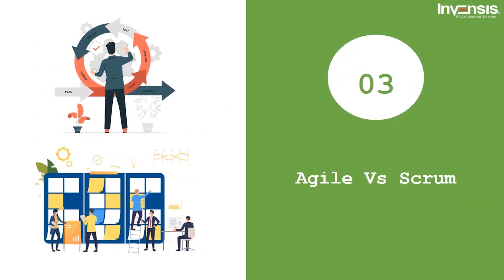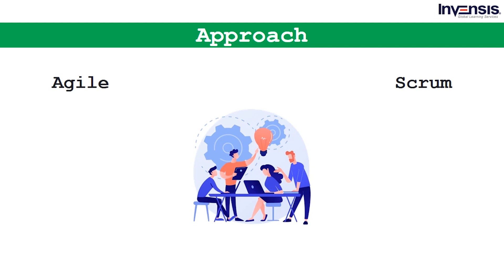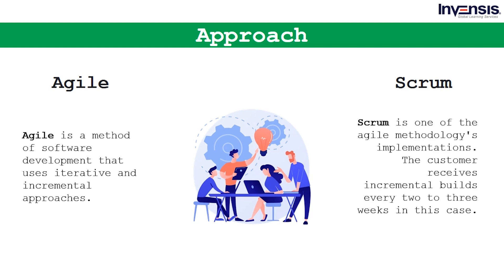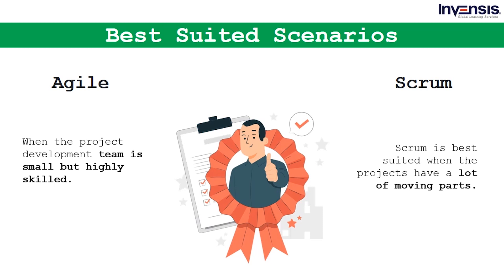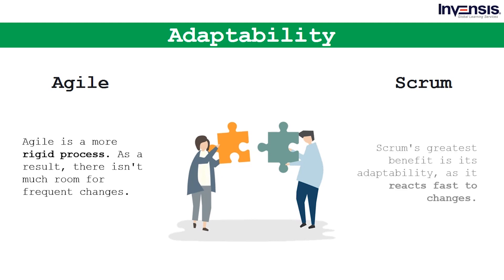Now let's look at the differences between Agile and Scrum. Agile is a method of software development that uses iterative and incremental approaches, while Scrum is one of Agile's implementations, with incremental builds delivered to the customer every two to three weeks. Agile is best suited to small but highly skilled teams, whereas Scrum works best for projects with a lot of moving parts. Compared to Scrum, Agile is a more rigid process with less room for frequent changes, while Scrum's greatest benefit is its adaptability and ability to react quickly to changes.